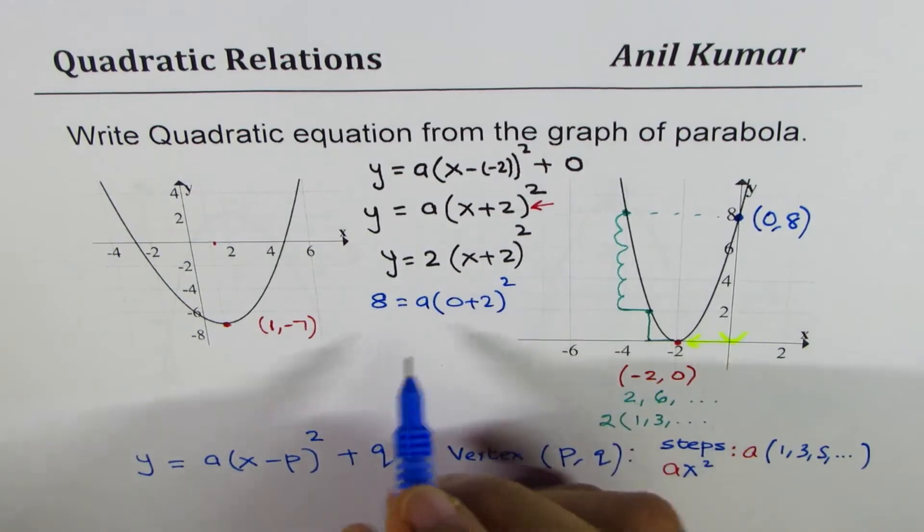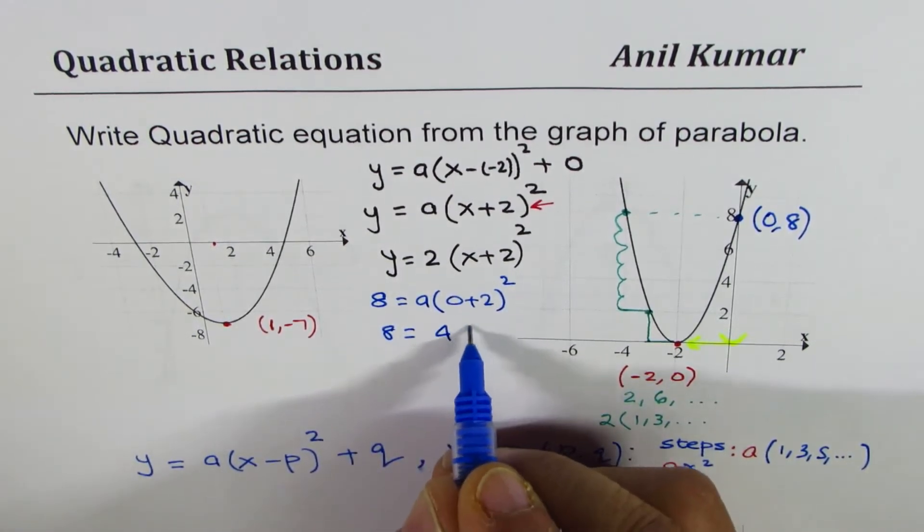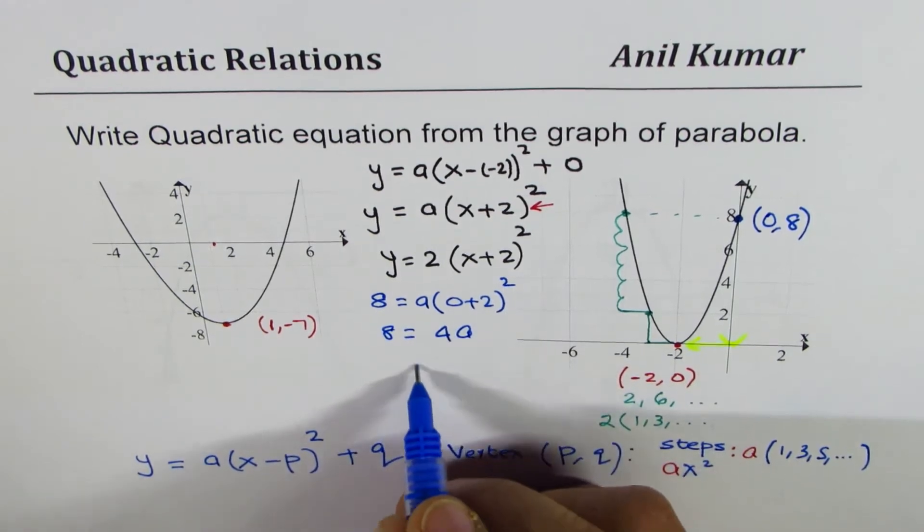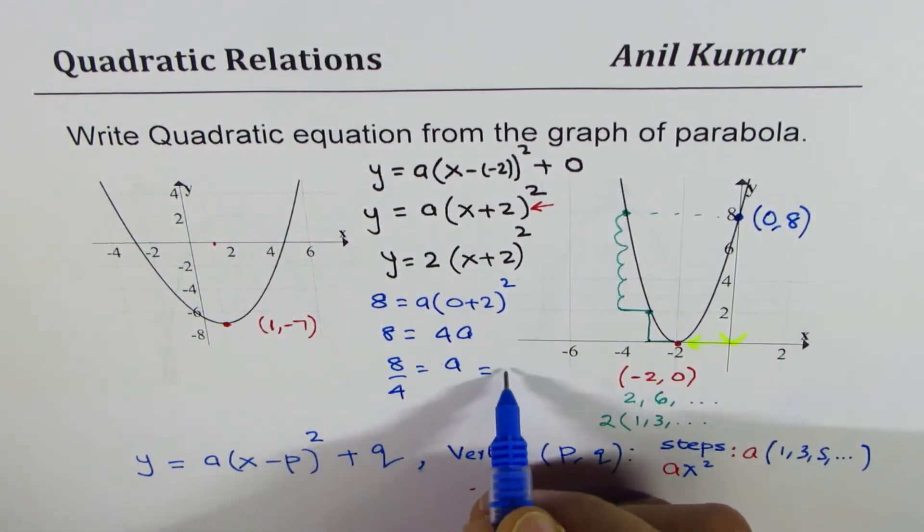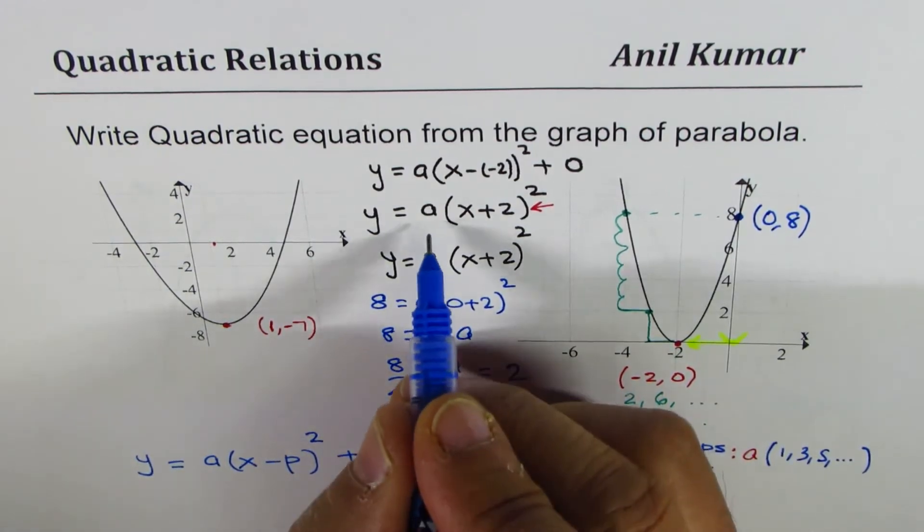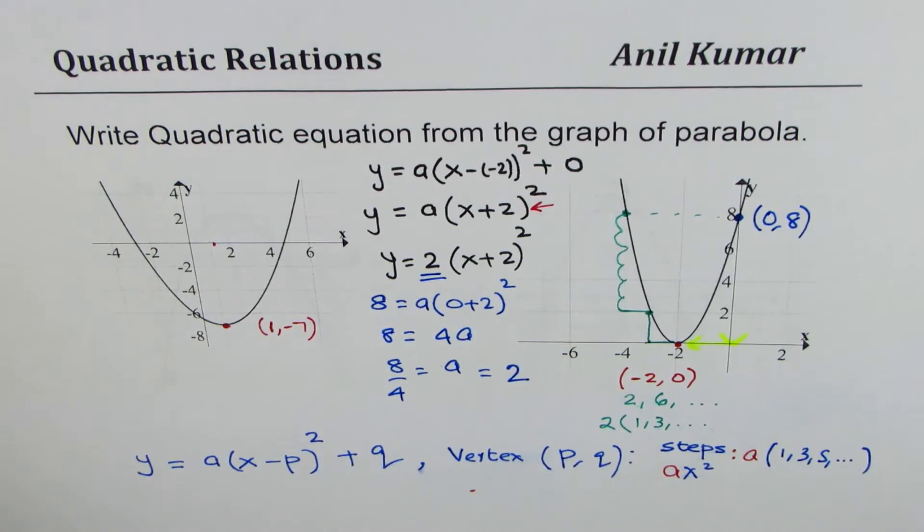So getting back to our equation, we'll substitute 0 for x, 8 for y. So we get 8 equals to a times 0 plus 2 whole square, and that is 8 equals to 4a, or a equals to 8 divided by 4 and that gives you a value of 2.